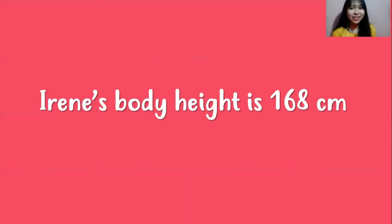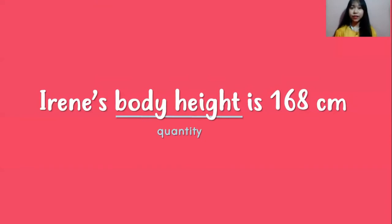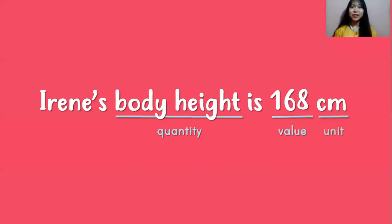Let's see the answer. Body height is the quantity — the thing that is being measured. And then 168 is the value, or the number, of the measurement. And last, centimeter is the unit of the body height. You got it?